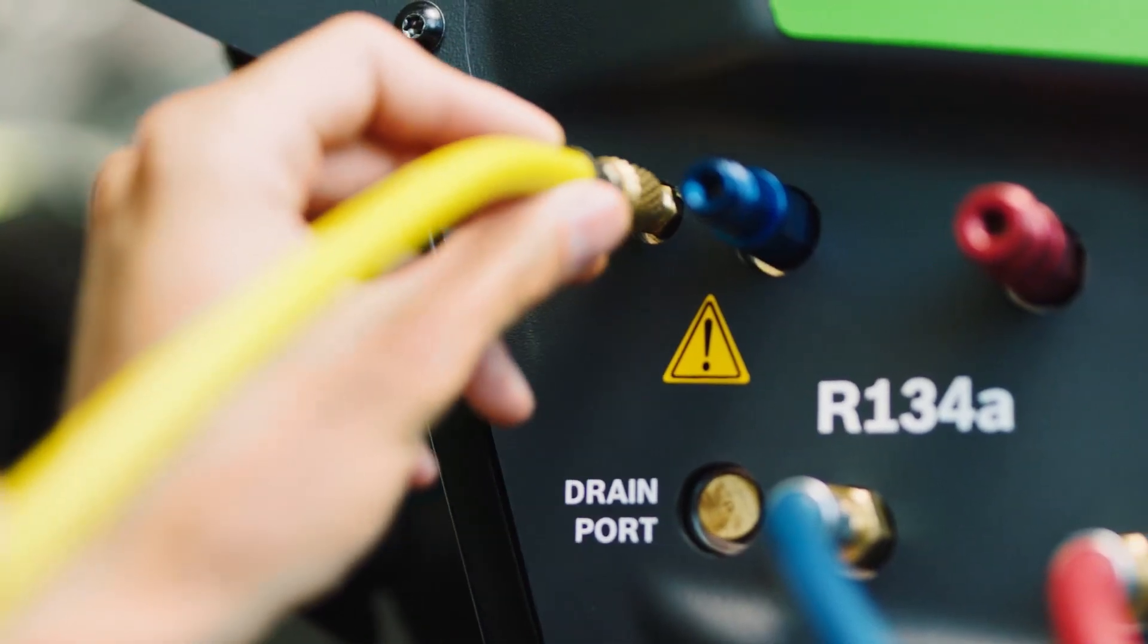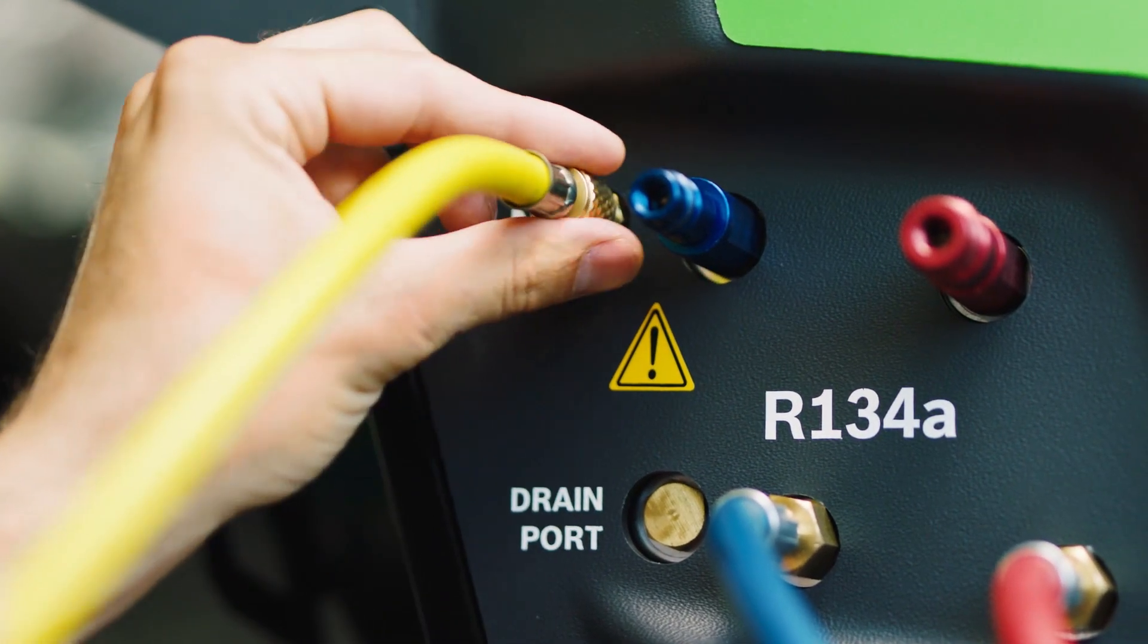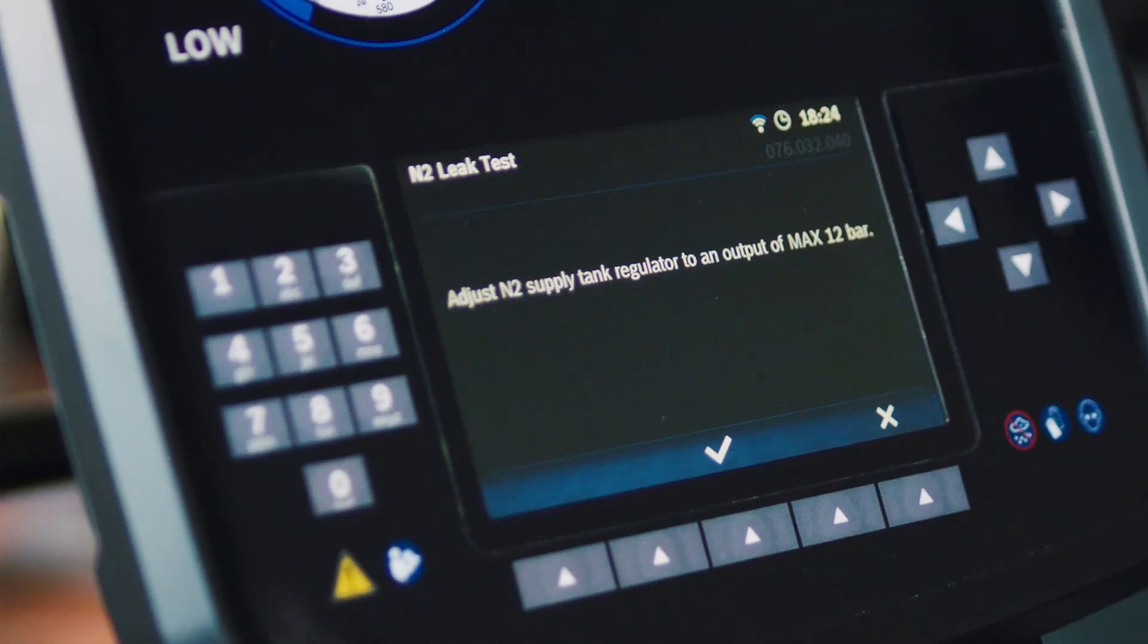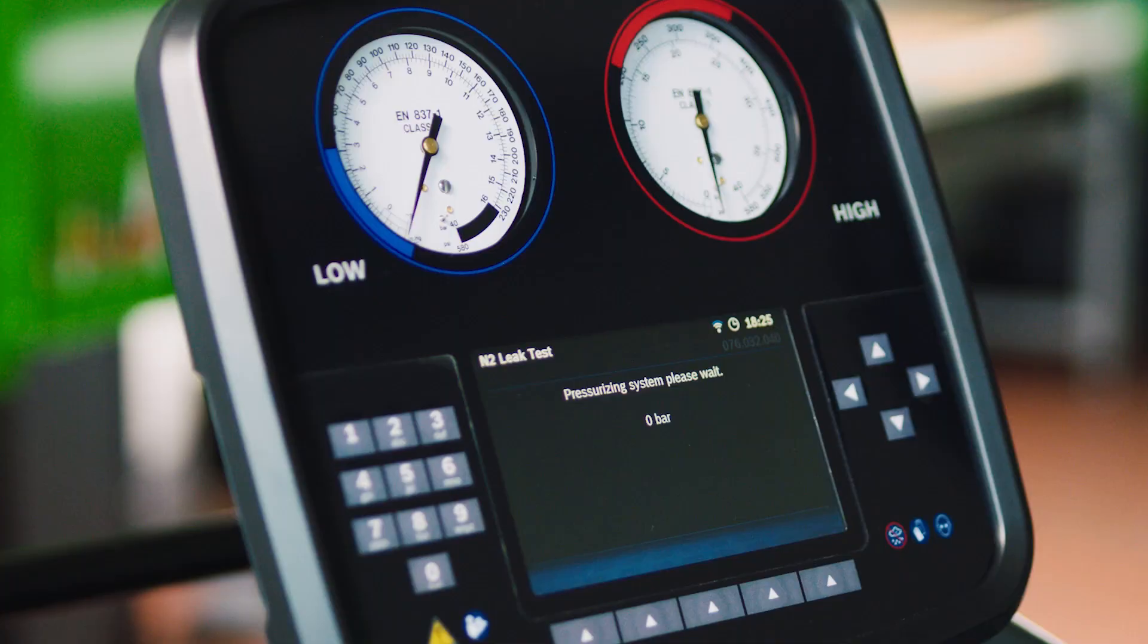Connect the hose of the nitrogen bottle to the NX port. Then you will have to adjust the supplied tank pressure regulator and the ACS is ready for the N2 leak test.